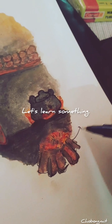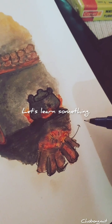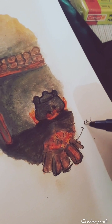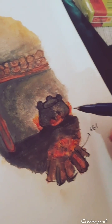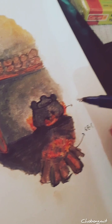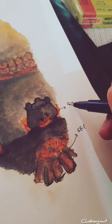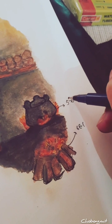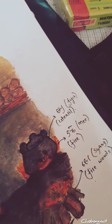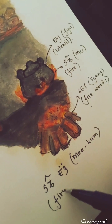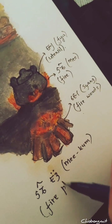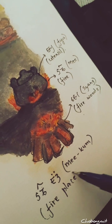Let's learn something. In Lepcha, we call firewood as Shang, fire as Uri, utensils as fuel, and fireplace as Linko.